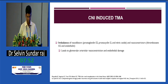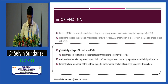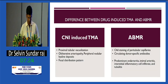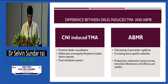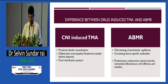Post-transplant TMA is often an interplay between donor and recipient genetic backgrounds as well as environmental factors that trigger endothelial injury. Regarding CNI-induced TMA, there is an imbalance between vasodilators and vasoconstrictors leading to glomerular capillary and arterial vasoconstriction and endothelial damage. In mTOR inhibitors, P70S6K signaling is blocked, preventing endothelial cell proliferation, with local activation of the clotting cascade and consumption of platelets and red blood cell destruction. It is important to differentiate CNI-induced TMA from ABMR, as management differs. Clues for CNI toxicity include proximal tubular vacuolization, peripheral nodular hyaline deposits, and focal distribution. Clues for ABMR include C4-D staining of peritubular capillaries, circulating DSA, endothelitis, and intimal arteritis.